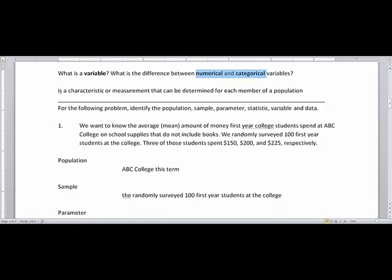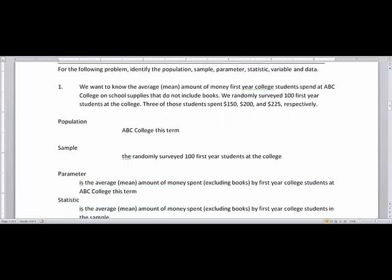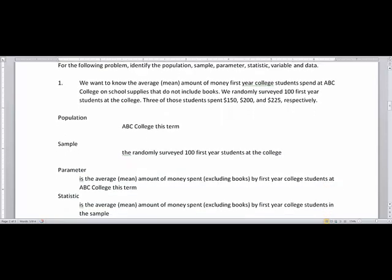For parameter and statistic, we will do these together and note the small differences between the two. The parameter is the average money spent by the first year students at the college, whereas the statistic is word for word except that it pertains to the students in the sample, not the whole first year students at this college.